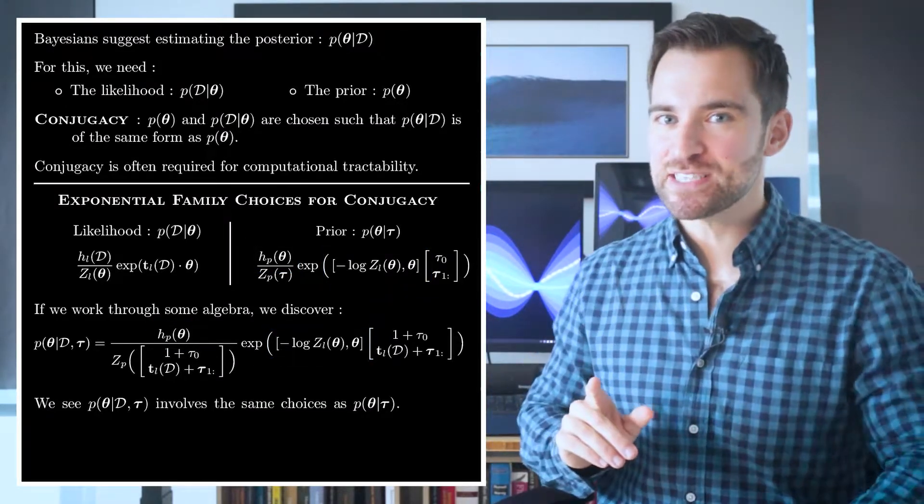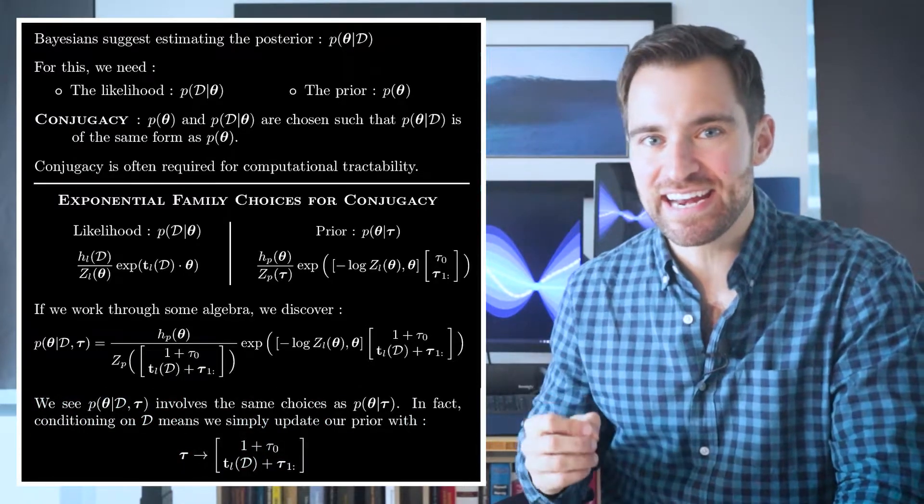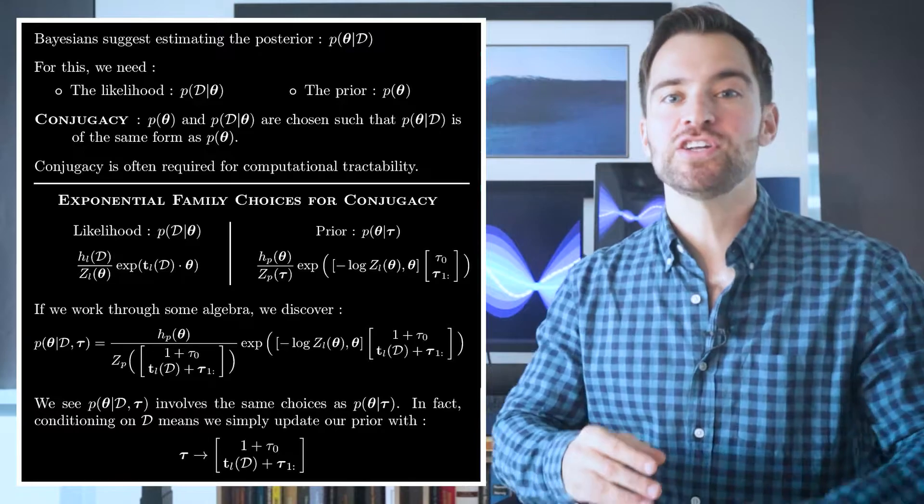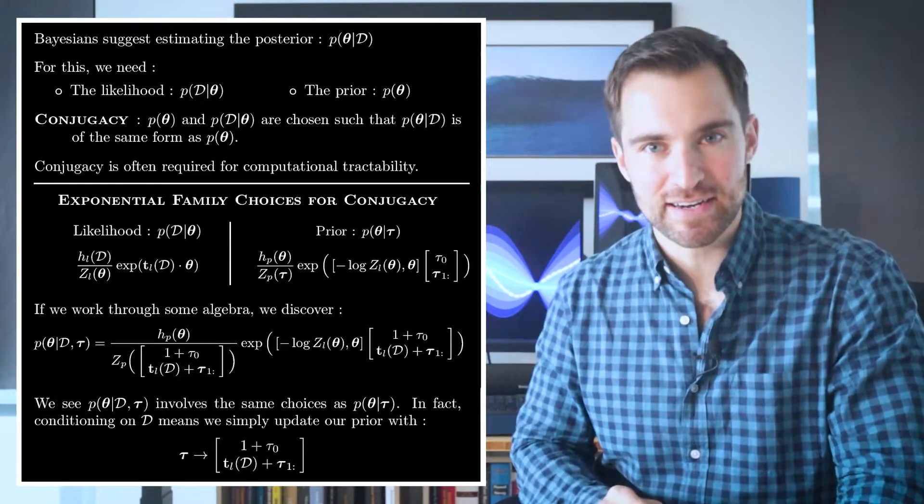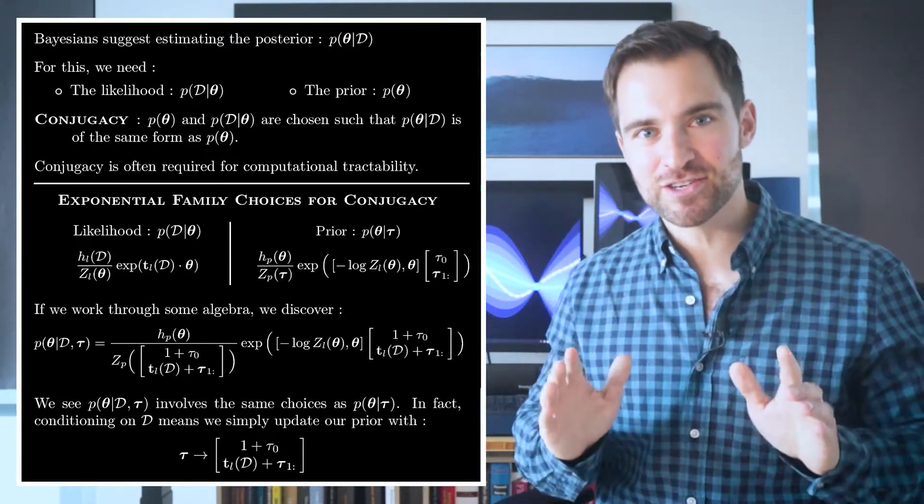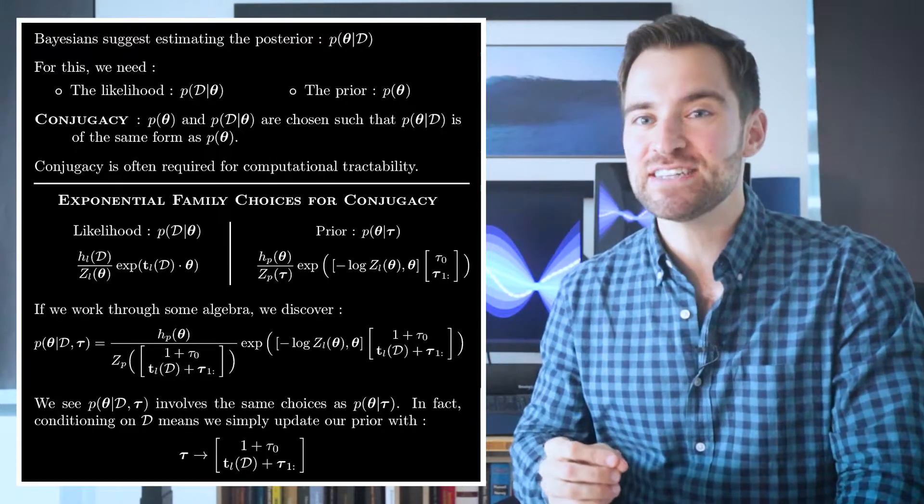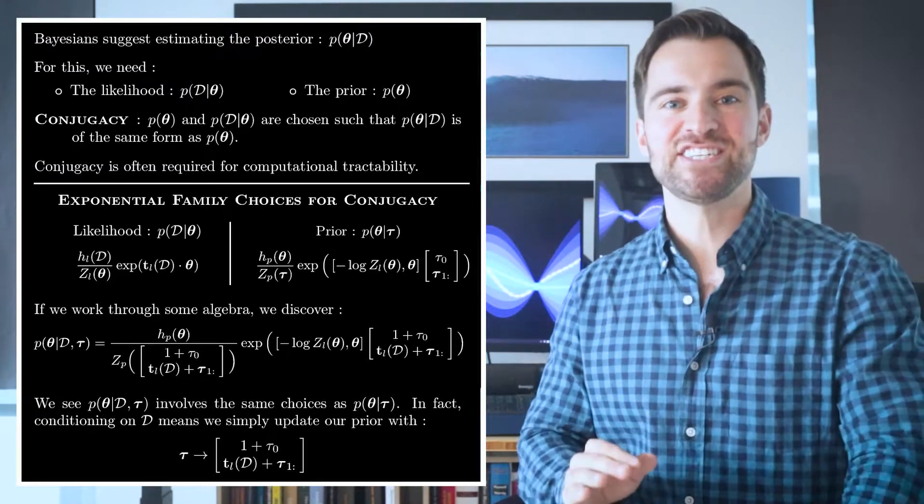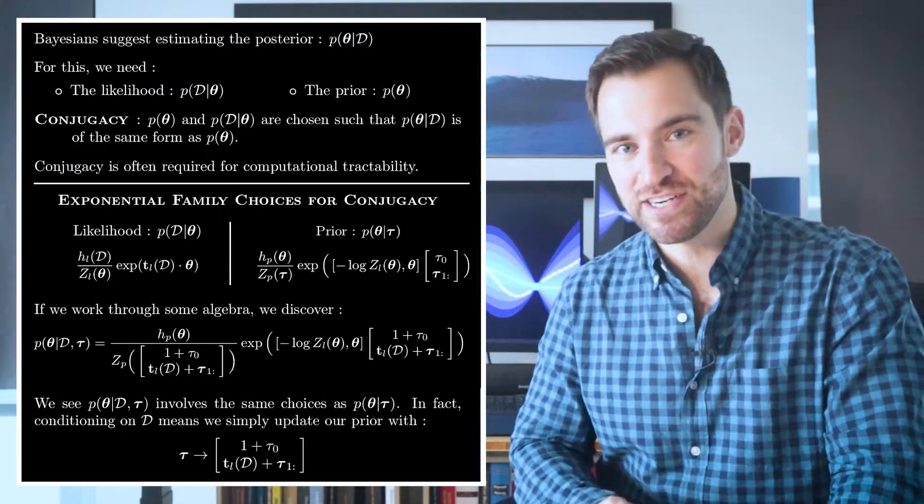Now, if we inspect this, we recognize that conditioning on the data just involves updating the vector we used to model θ in the prior to some other vector that depends on the data. This is a total luxury. Non-conjugate pairs can easily combine to produce distributions that are super hard to calculate. So we are fortunate that conditioning on the data reduces to such a simple operation.